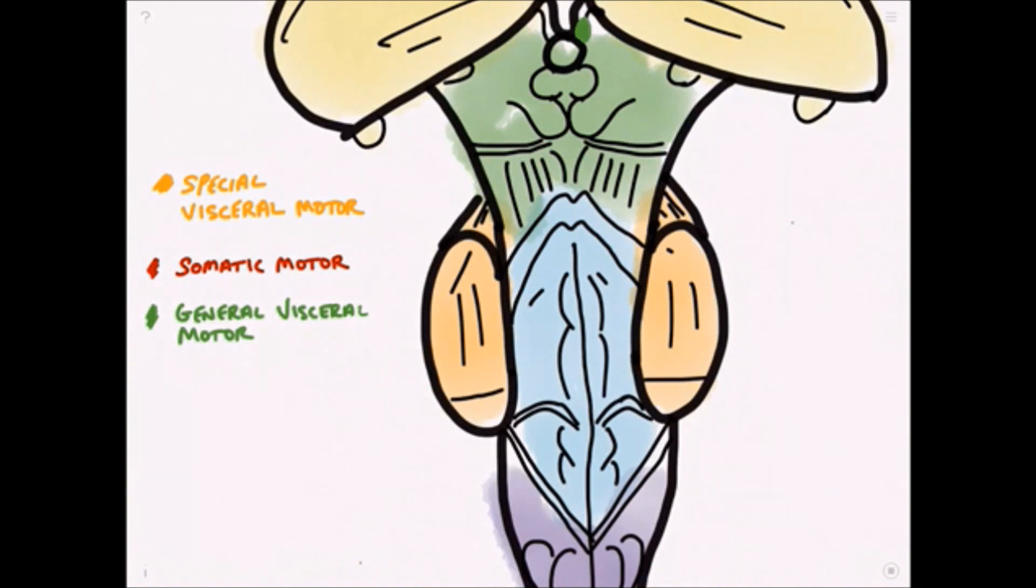This is the Edinger-Westphal nucleus, first of all, and it contains the cell bodies of the nerves which innervate the iris and the ciliary muscles of the eye. Below this we have the ocular motor nucleus which is involved in eye movements, as is the trochlear nucleus.